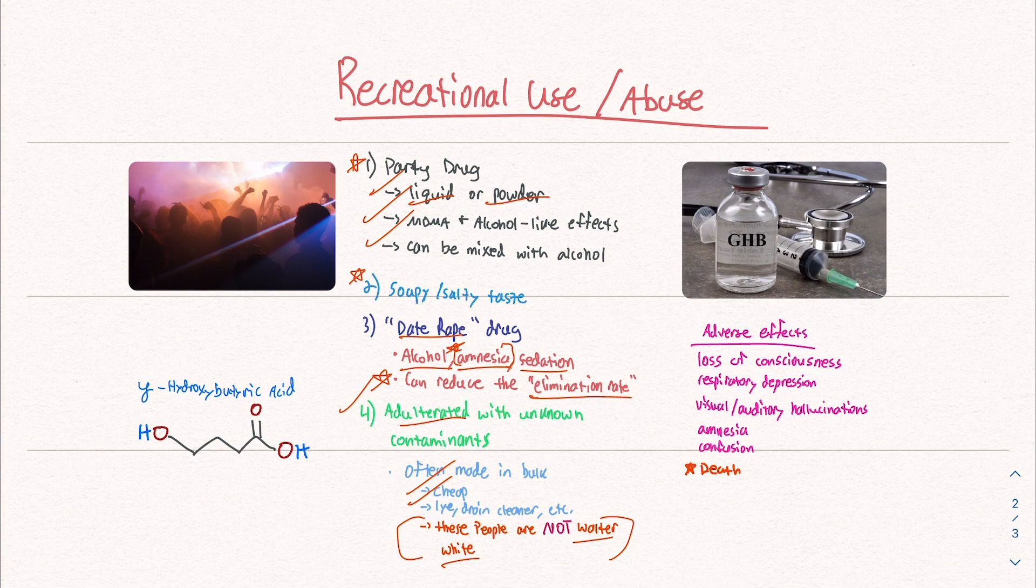It's most likely got all sorts of nasty things in it that you do not want. The adverse effects of GHB can be loss of consciousness, amnesia like I just mentioned, confusion, and respiratory depression. This is directly related to death.